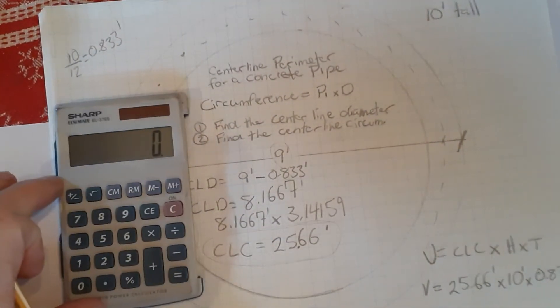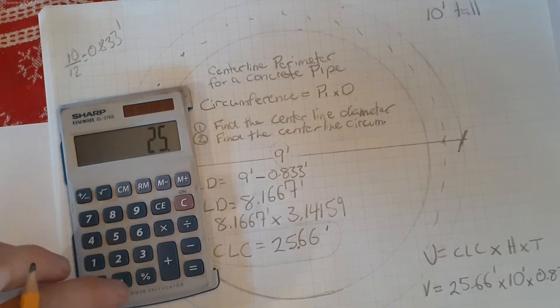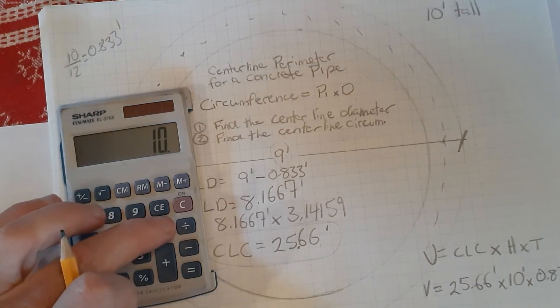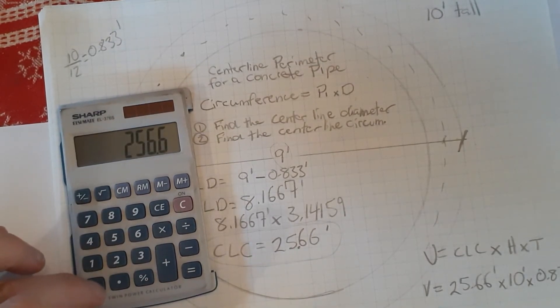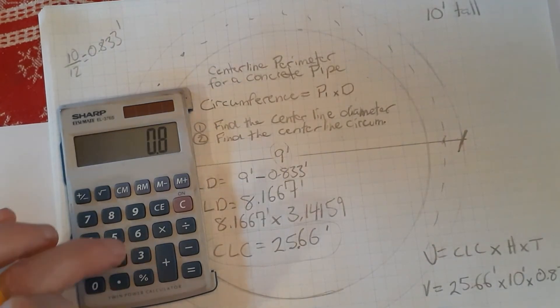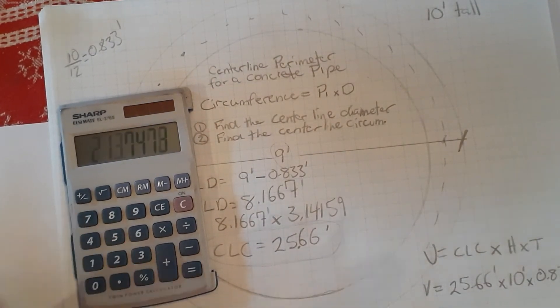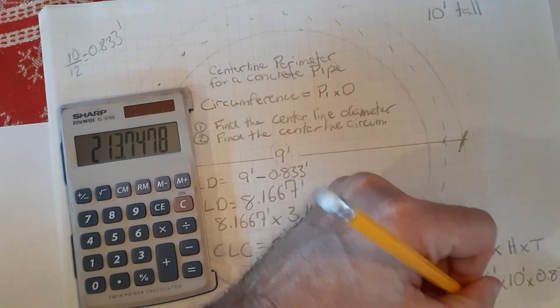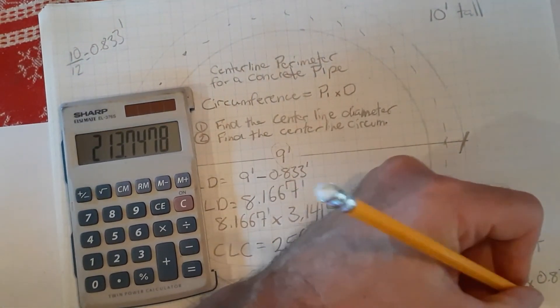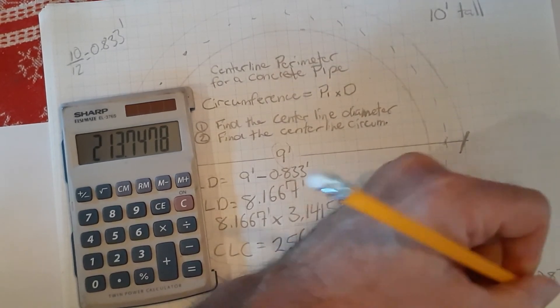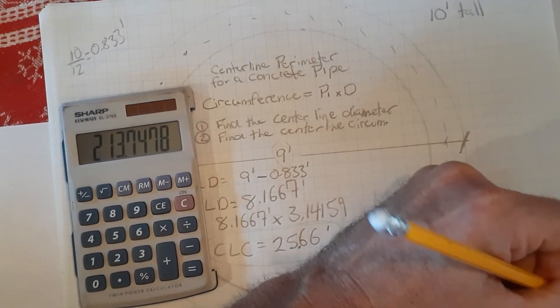Let's get our calculator tuned up here: 25.66 center line circumference multiplied by the height of the pipe, 10 feet, multiplied by the thickness of the pipe wall, 0.833 feet, and we end up with a total volume of 213.75 cubic feet.